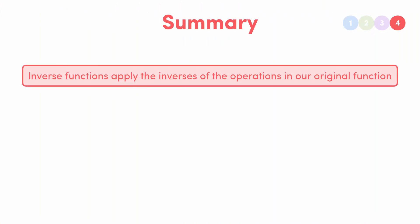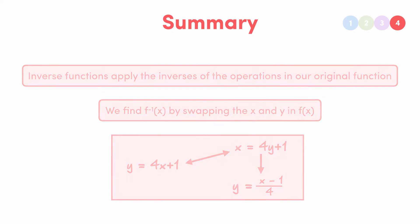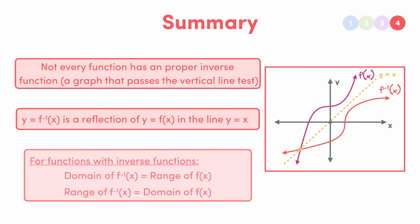Inverse functions apply the inverse operations of those in our original function. We can find them by swapping the x and the y in our function and solving for y, but note that not every inverse function is technically a function, if it doesn't pass the vertical line test, it's just a relation. Graphically, the inverse function is just a reflection of our original function in the line y equals x. And finally, the domain of our inverse function is just the range of our original function, and the range of our inverse function is the domain of our original function.